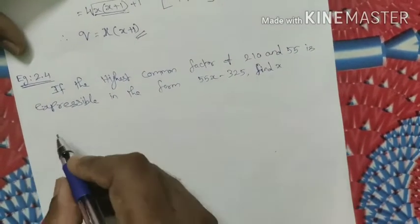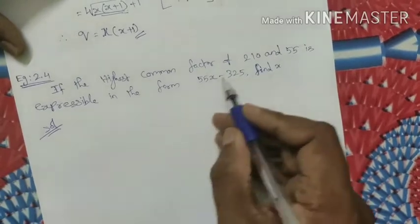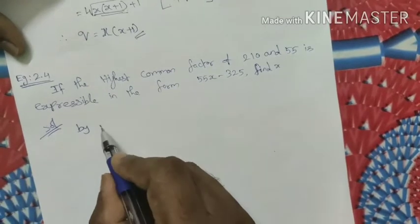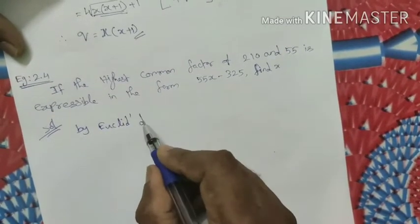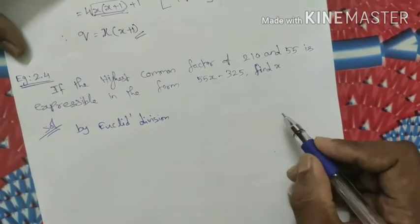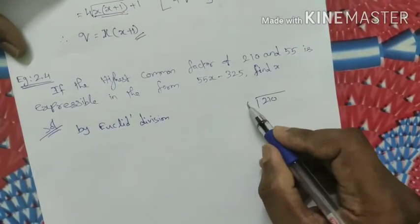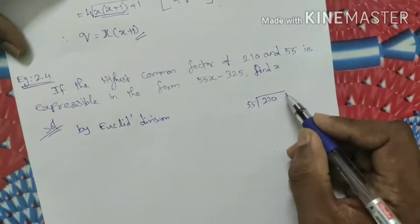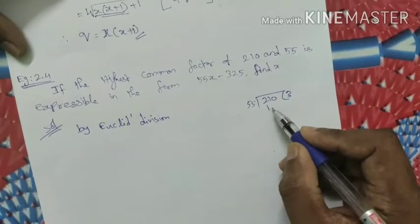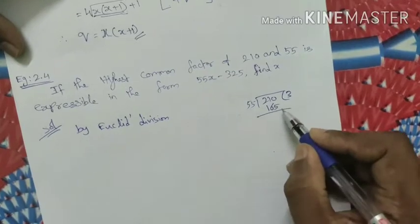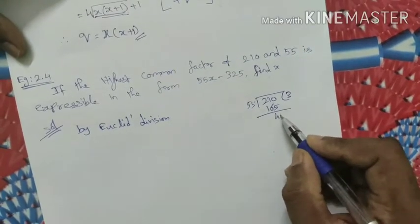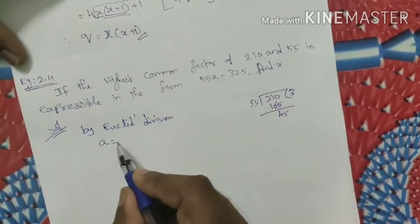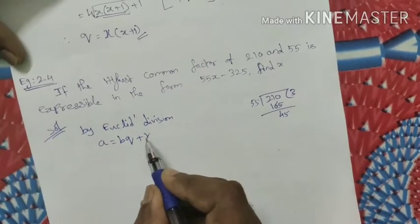Let's see the solution using the long division method by Euclid's division. We have the formula: a is equal to bq plus r. This is the formula we will use.